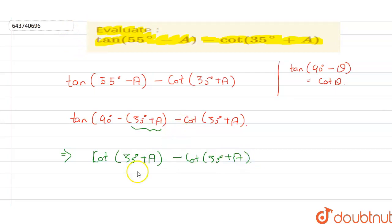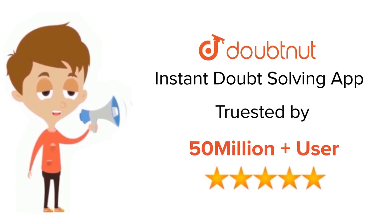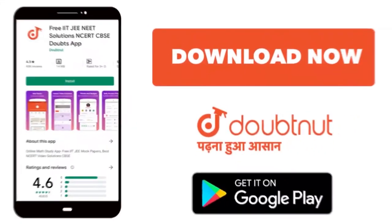this cot(35° + A) same value as this cot(35° + A), so the final answer for this question is equal to zero, which is the final answer. Thank you. For class 6 to 12, IIT-JEE and NEET level, trusted by more than 5 crore students. Download Doubtnut today.